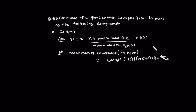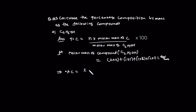So now we have the percentage of carbon equal to n times the molar mass of carbon divided by the molar mass of the compound. This gives the percentage of carbon. The molar mass of the compound is 46 grams per mole.